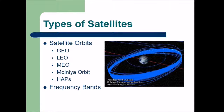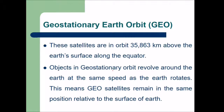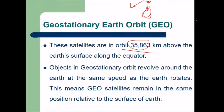The types of satellites include GEO, LEO, MEO, Molniya orbit, and HAPs. Geostationary satellites are in orbit 36,000 km from the earth's surface along the equator. Objects in geostationary orbit revolve around the earth at the same speed as the earth rotates, so they essentially remain in the same position relative to the surface of the earth — available 24/7 to that position.